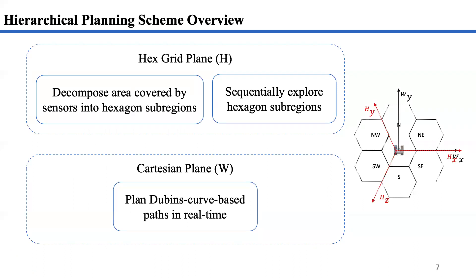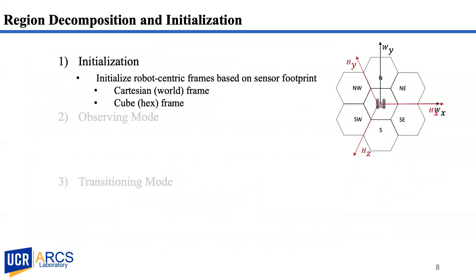In addition, in the hexagon grid plane, the robot dynamically determines a sequence of subregions to visit. Low-level planning runs on the Cartesian plane. A robot plans two-beam curve-based paths in real-time to complete observation tasks and to move to other subregions. Consider a robot equipped with navigation sensors, which can be LiDAR or depth cameras, and observation sensors, which can be RGB or thermal cameras.